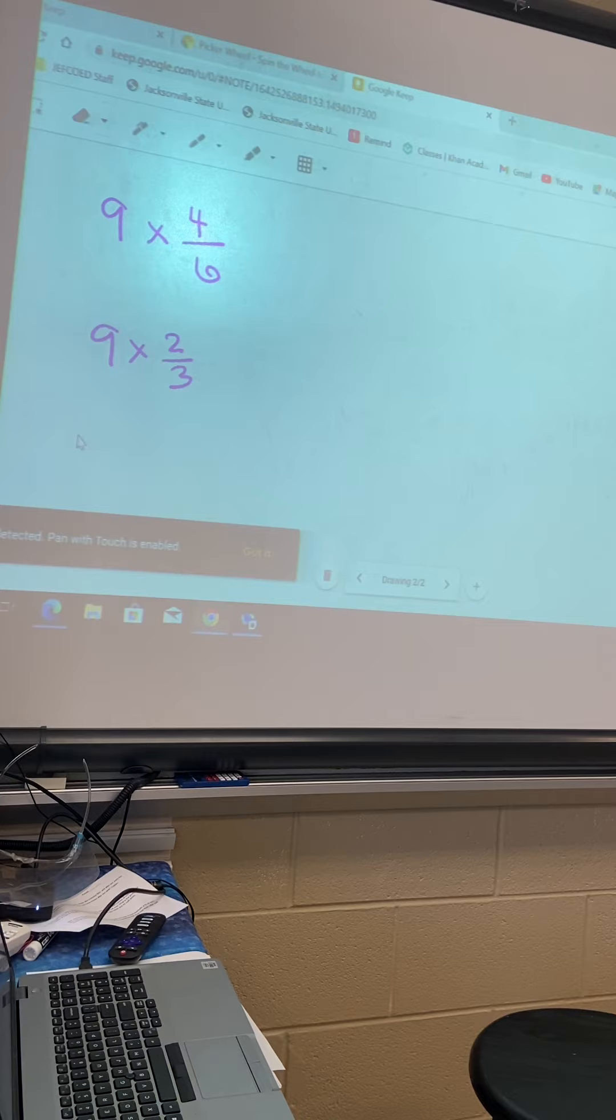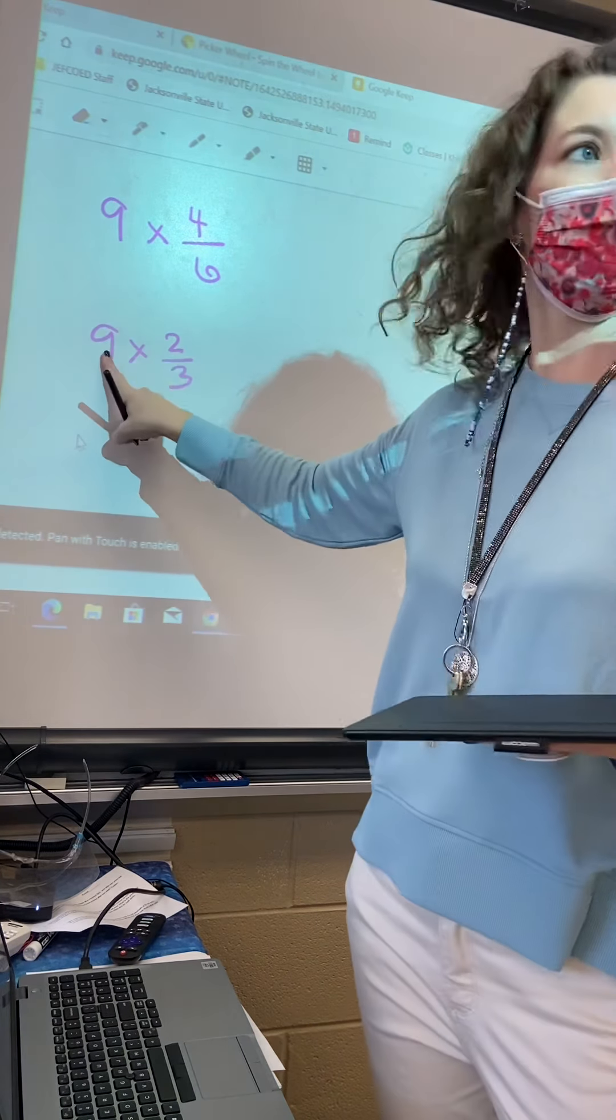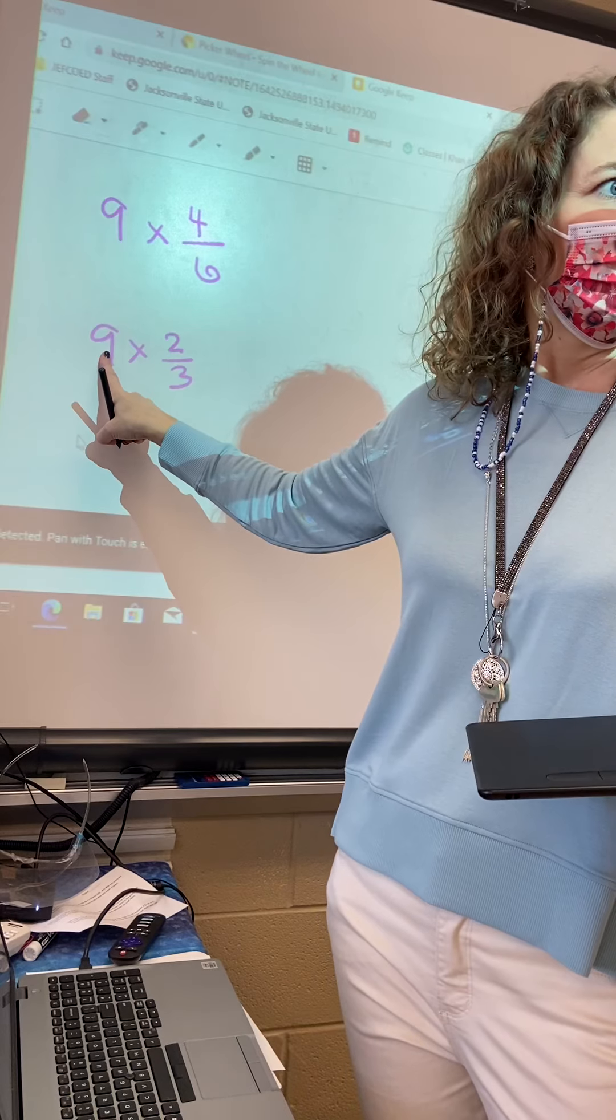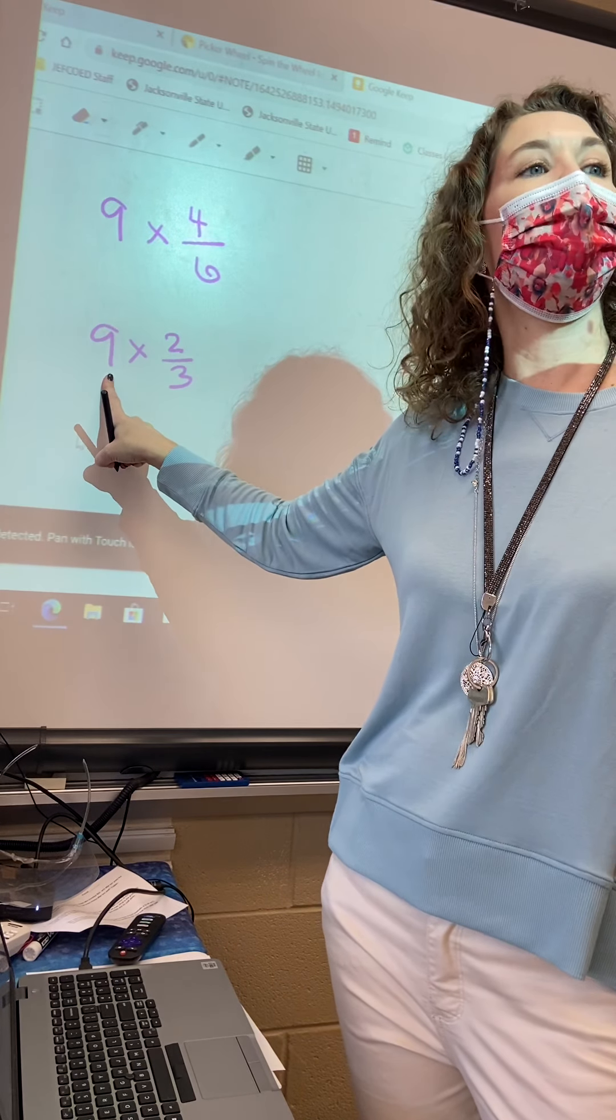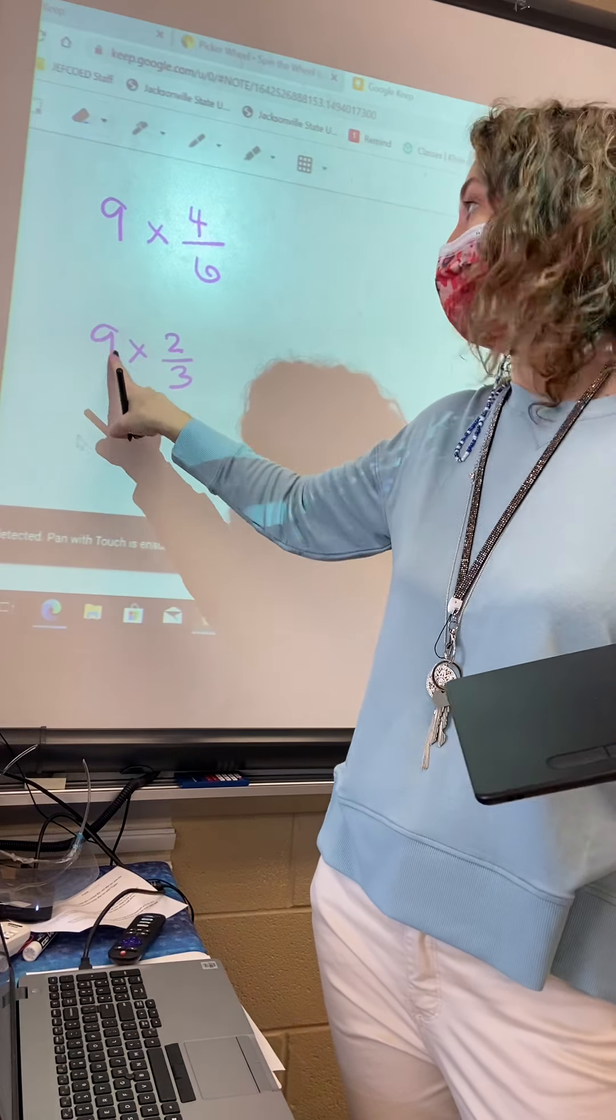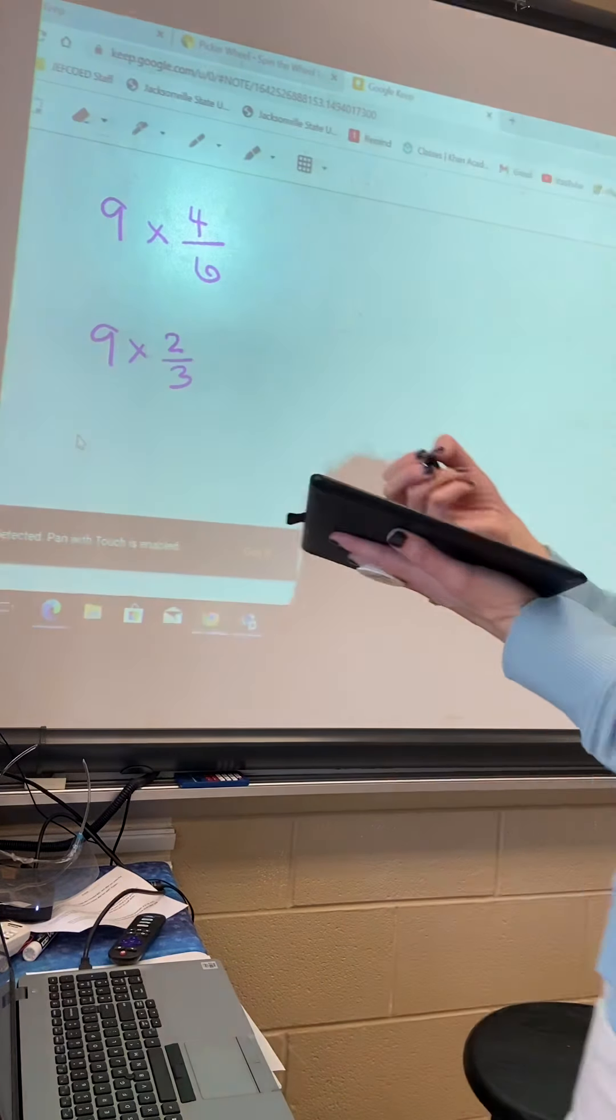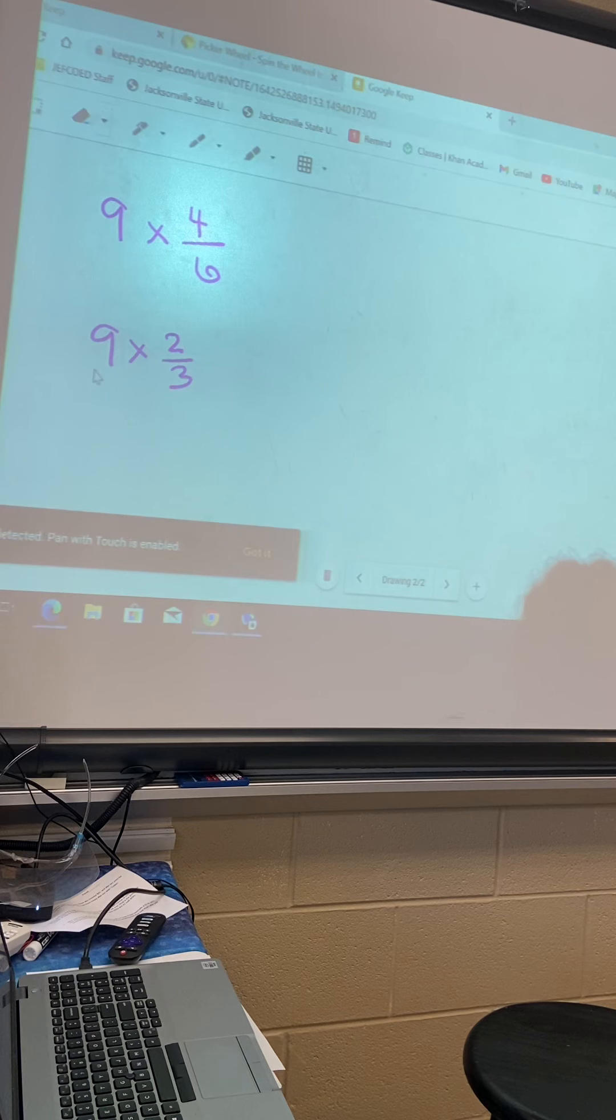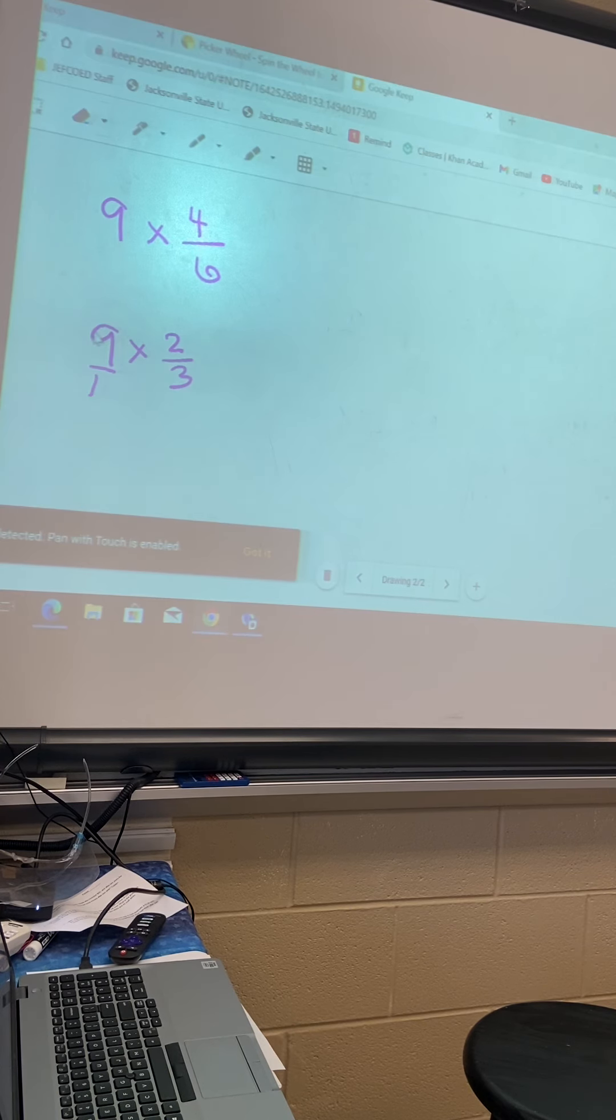Okay. 9. It's a whole number. How can I make this a fraction? It's not 9 over 9. 9 over 9 would be 1. 9 over 1. 9 over 1. So we put a 1 underneath there. 9 over 1. Okay? Now look for seesaw friends. Okay?